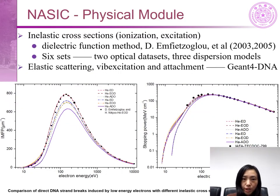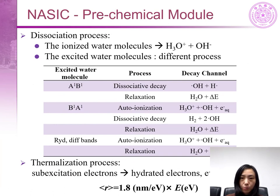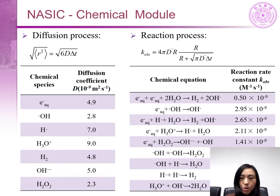In the physical model, the inelastic cross-sections considering ionization and excitation are calculated using the dielectric function method. Totally six data sets were obtained based on the different optical data sets and different dispersion models. In the pre-chemical model, the dissociation process and the thermalization processes are simulated to calculate the primary yield and distribution of free radical species. In the chemical model, the multi-color method was used to simulate the diffusion and reaction of free radical species.